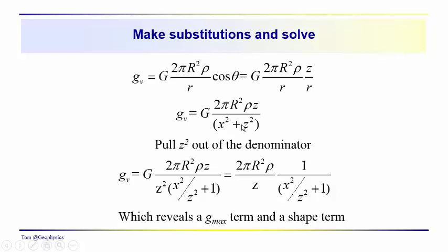So now we're going to pull Z squared out of this denominator, so we have a Z squared here, we have a Z up here, so one of these Z's cancels out, and we get 2π R² ρ over Z times 1 over X squared over Z squared plus 1. So, this is the form we left you with the video before last. We've got a term here which defines the maximum acceleration due to gravity over the sphere, and then we have this term here, which is the shape term.